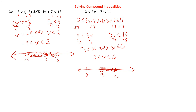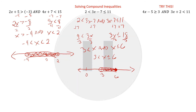See how it's basically the same as solving the ORs or even just equations? Here's another shot at one. We have four x minus five is greater than or equal to three, and three x plus two is less than 11. So go ahead and pause this, try out the problem, and then come back and we'll take a look at it.